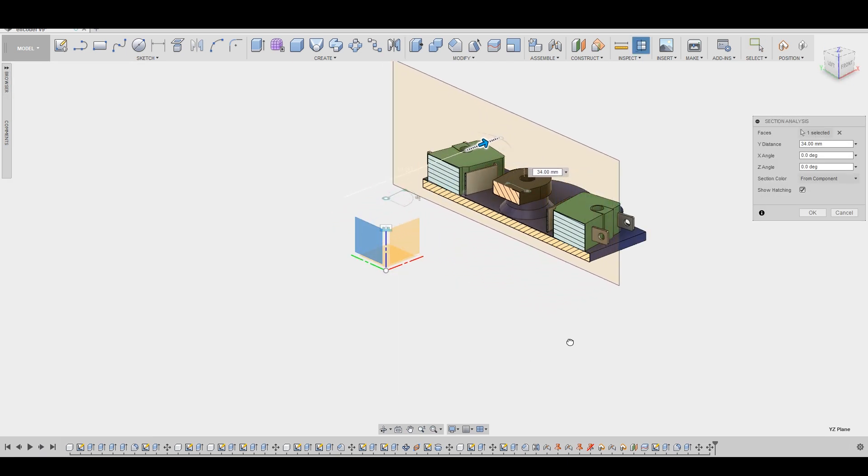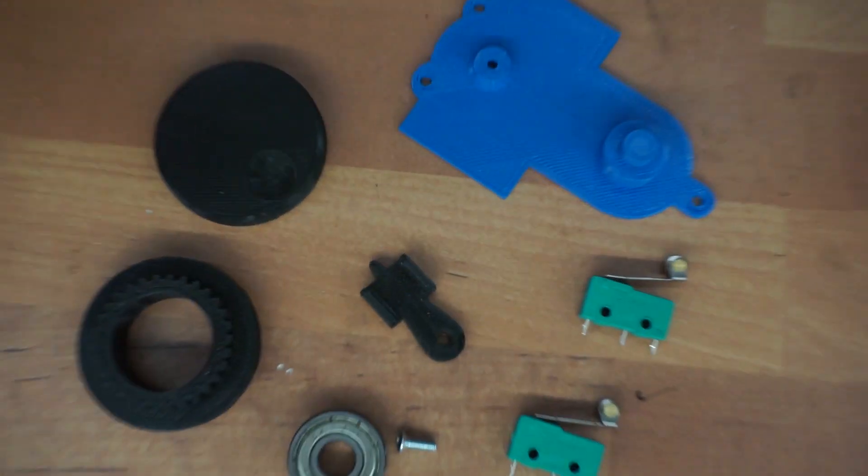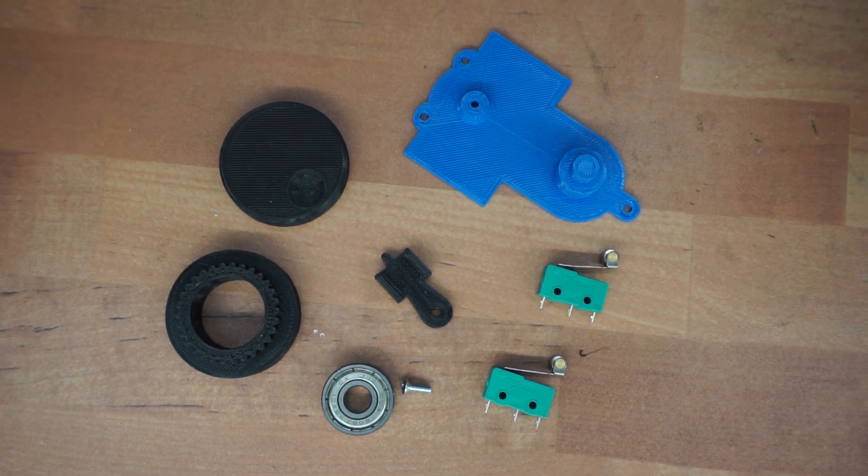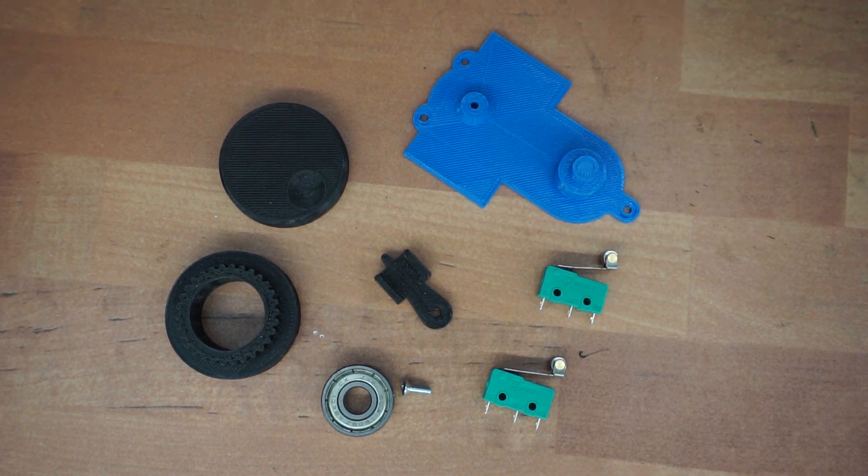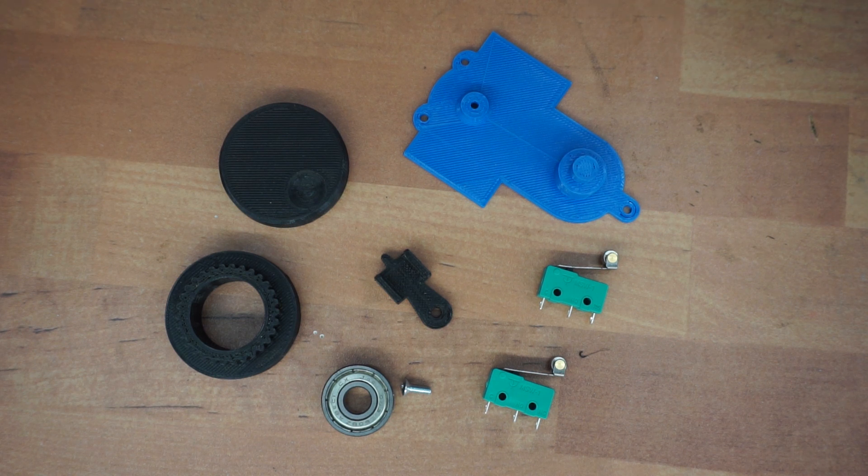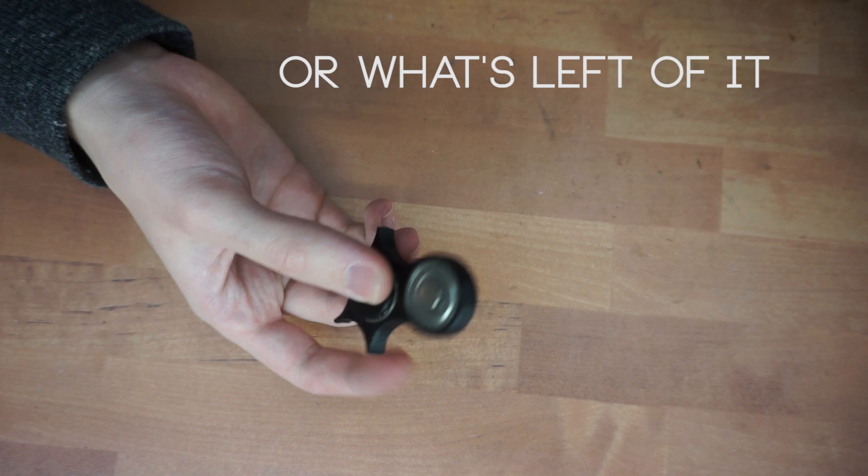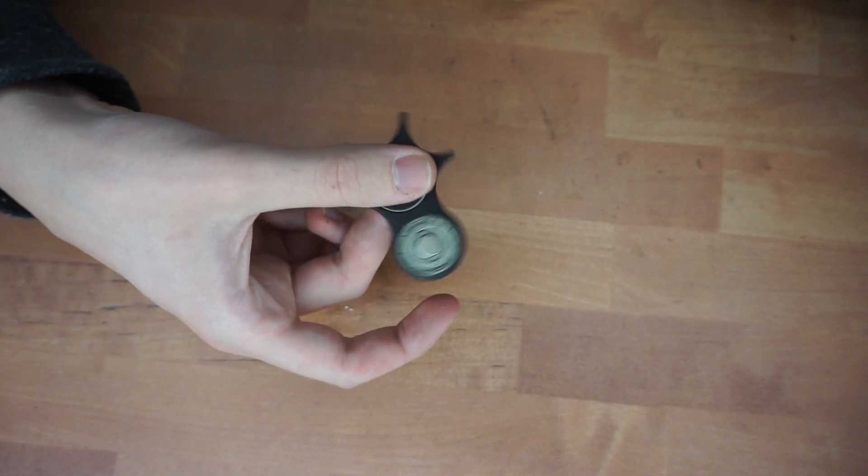Apart from the 3D printed parts, there are just the two micro switches, an M3 screw, and there is also a ball bearing, which is just a regular skateboard bearing. Or if you still have a fidget spinner, then you can just finally put that to some good use.